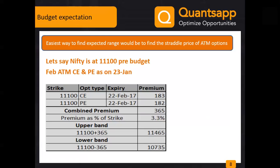Taking the ATM option as a price reference becomes a very good judgmental tool. Yesterday the combined premium was around 365 on Nifty at 11,100, which comes to 3.3%. Adding the total premium of 365 gives an upper band of 11,465 and subtracting gives a lower band of 10,735. This is the band the option prices are looking out for.